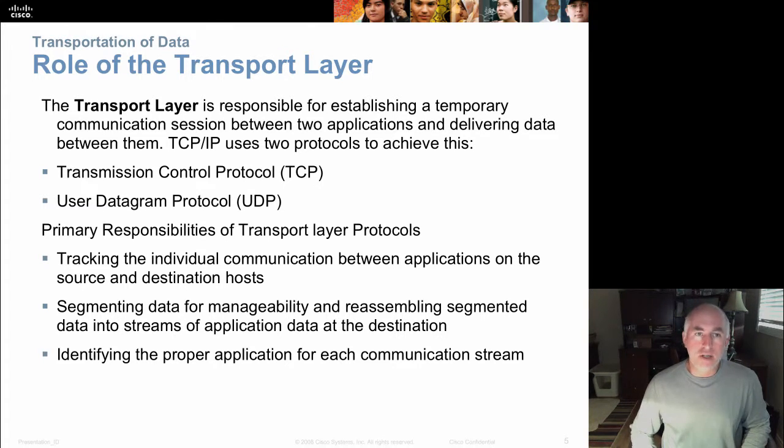Layer 4 is dealing application to application. And you have a choice. Layer 4 can use one of two common protocols, either TCP or UDP. In general, the transport layer provides tracking of the communication between those applications. It segments data for manageability so that they can be sent in small chunks out on the network and then reassembled. And it identifies the proper application for each arriving segment.